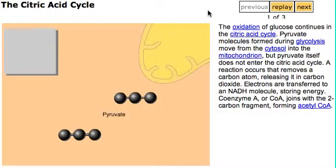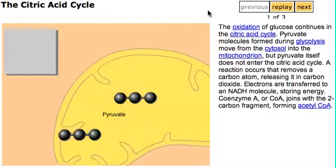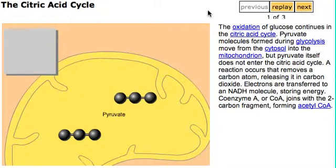The oxidation of glucose continues in the citric acid cycle. Pyruvate molecules formed during glycolysis diffuse from the cytosol into the mitochondrion, but pyruvate itself does not enter the citric acid cycle.